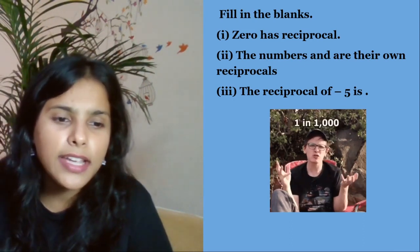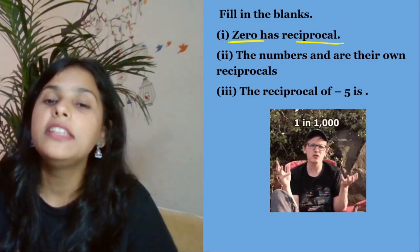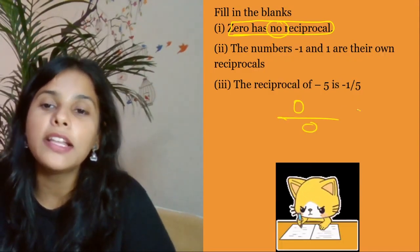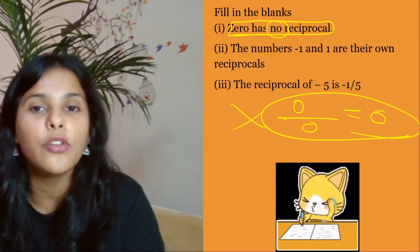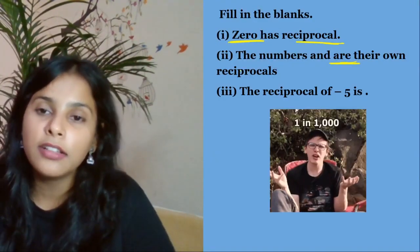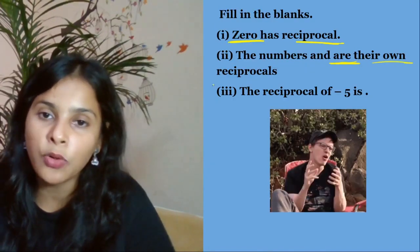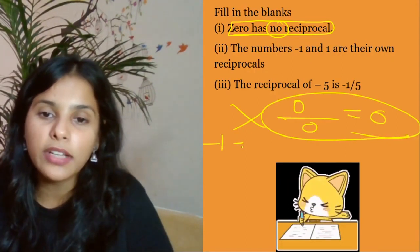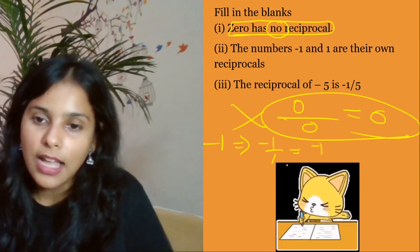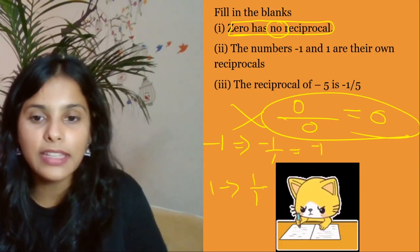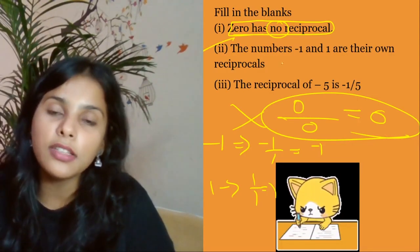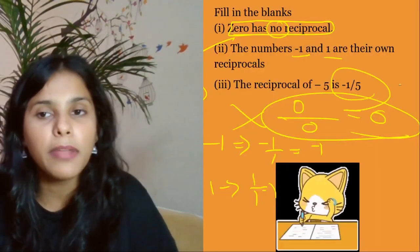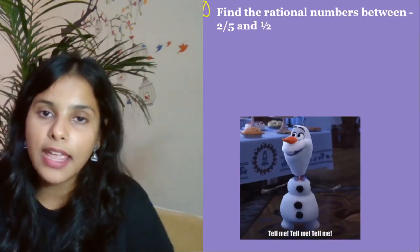Next question: does zero have a reciprocal? No — zero has no reciprocal because zero has no defined value for its reciprocal. Next part: which numbers are their own reciprocals? Definitely -1 and 1. The reciprocal of -1 is -1 itself, and the reciprocal of 1 is 1/1 = 1. So the numbers whose reciprocal is themselves are 1 and -1. Reciprocal of -5 is -1/5.